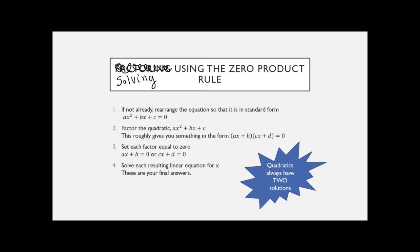Step one is to first make everything equal to zero — add and subtract so that everything's on the same side. Step two is to factor what you have on that left side. You want to factor that quadratic part, and your goal is to get it in the form where you have two parentheses multiplied together, with the equal zero at the end, because it's still an equation. For factoring review, you can go back to your week five material.